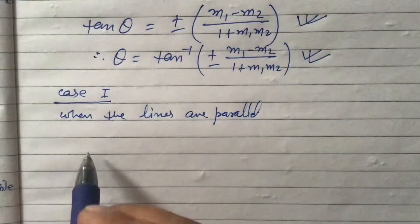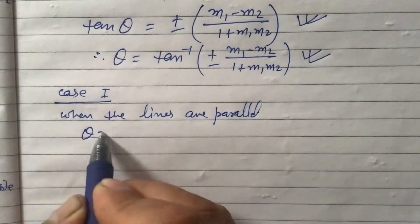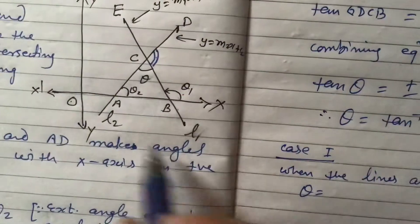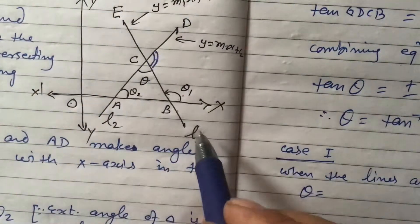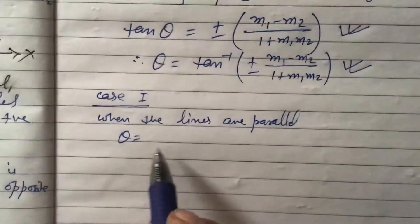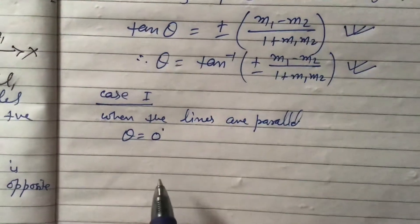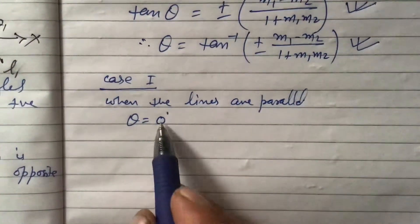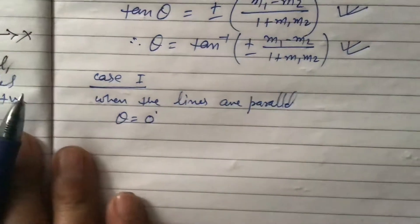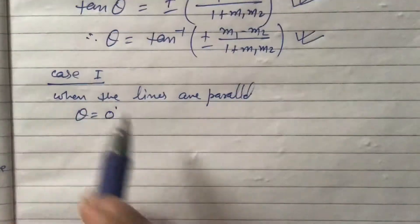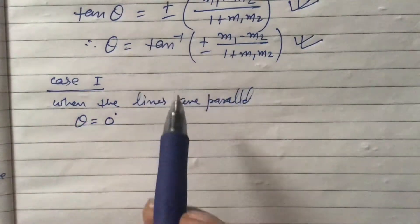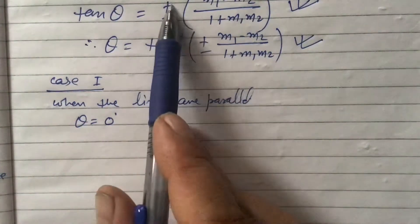If the lines are parallel, the angle between them is zero, so theta = 0 degrees. Since 0 degrees is neither acute nor obtuse, we do not take the plus-minus sign. We can write directly: tan(theta) = (m1 − m2) / (1 + m1·m2).